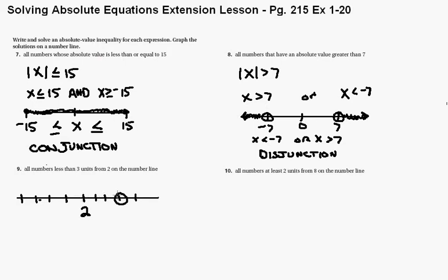1, 2, 3 — open circle there because it's not counting all the way up to, not including the third unit. Go 3 units this direction. So what do we got here? This is 5 right here, and going the other way — 2, 1, 0, negative 1. So this is all the numbers less than 3 units from 2, right here. Looks like a conjunction to me. If I had to write this, I would go x less than 5 and greater than negative 1.